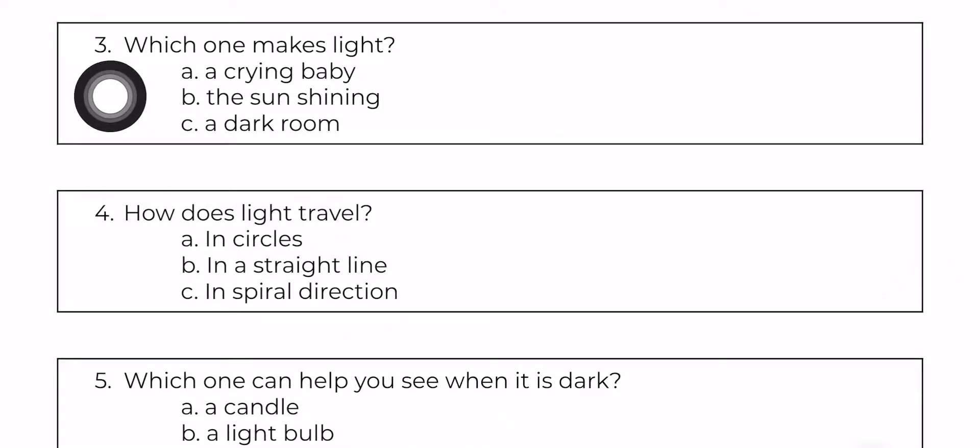Three, which one makes light? A. A crying baby. B. The sun shining. C. A dark room. Which one makes light?